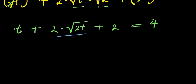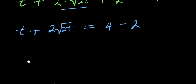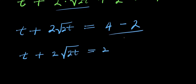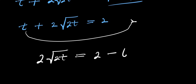Multiplying this out, we have 2 root 2t. Moving the t over to the right side, we have t plus 2 root 2t equals 4 minus 2, which is 2. Now moving the t over, it becomes minus t, so we have 2 root 2t equals 2 minus t.